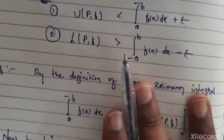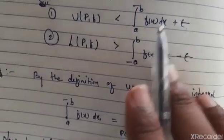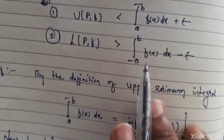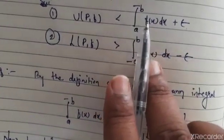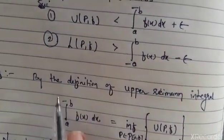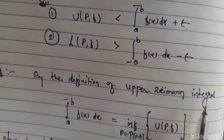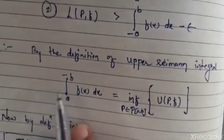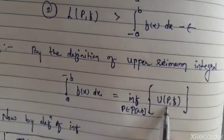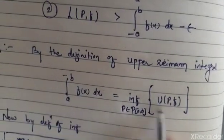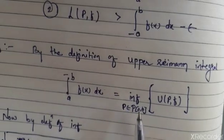Now we see two terms used here: upper Riemann integral and lower Riemann integral. We have to start by writing the definition of the upper Riemann integral. We know the upper Riemann integral is the infimum of the upper Riemann sum, where P belongs to P(a,b).